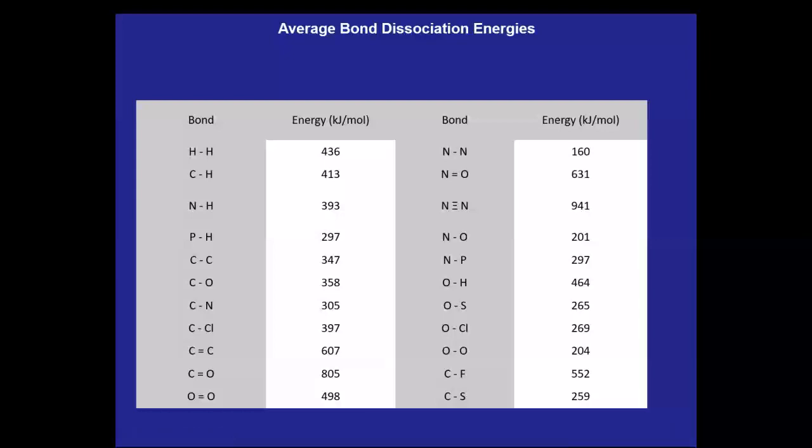That is, how much does it cost to break one mole, in this case, of bonds between two hydrogen atoms? It costs 436 kilojoules. Not quite as expensive an energy to break a carbon hydrogen bond, and these are all single bonds over here until we get to carbon-carbon double bond.